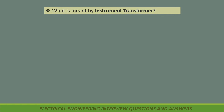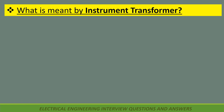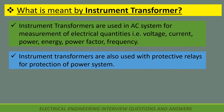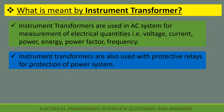What is meant by instrument transformer? Instrument transformers are used in AC systems for measurement of electrical quantities such as voltage, current, power, energy, power factor, and frequency. Instrument transformers are also used with protective relays for protection of power systems.